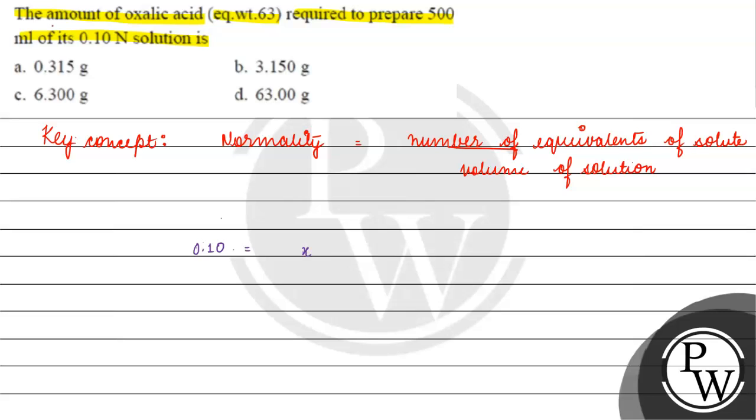Number of equivalents - we have the number of equivalents and how much is the volume of solution? 500 ml. So, 500 into 10 raised to the power minus 3 liters. Let us write it because we have 1 ml is basically equals to 10 raised to the power minus 3 liters.